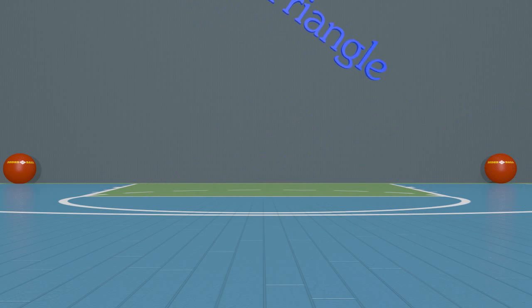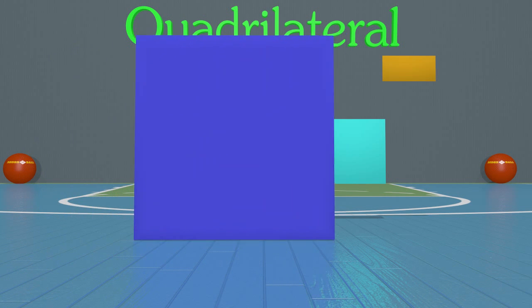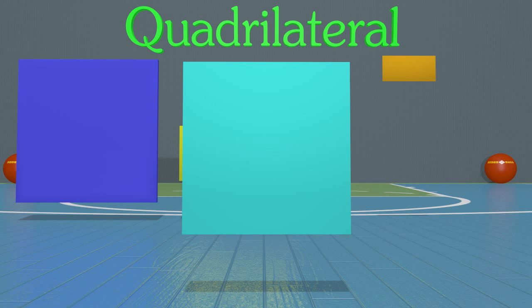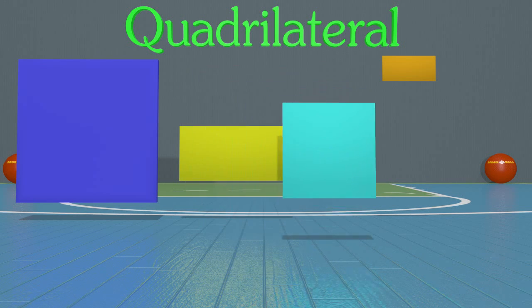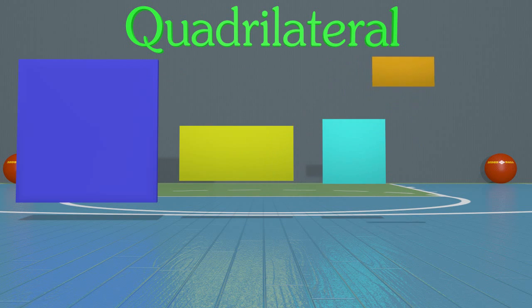Now we're going to look at quadrilaterals. A quadrilateral is any shape that has four sides and four angles. Many shapes can fit the attributes of a quadrilateral. Here are a couple of quadrilaterals — let's learn the names of these shapes. The first shape is called a square. The next shape is called a rectangle. This next one is a square just like the other one. And this last shape is another rectangle. All of these shapes are quadrilaterals because they have four sides and four angles.